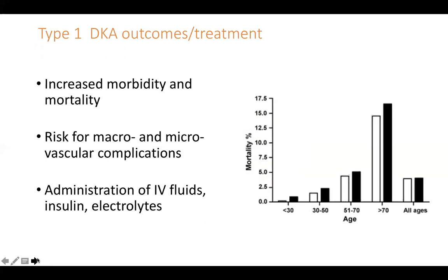Young children are the ones most frequently admitted to the hospital with diabetic ketoacidosis. Although this graph shows the lowest mortality rate for those under 30, one study suggested this is underdiagnosed — and more underdiagnosed the younger people get. Overall, DKA results in about 2–5% of deaths, but for elderly over 70, mortality reaches 15%. Treatment includes IV fluids so the kidney can continue to excrete ketones, insulin so the body can use glucose for fuel, and electrolytes to replace those lost or shifted.